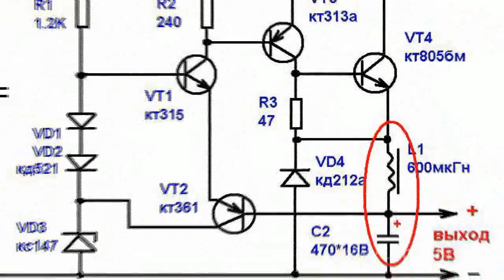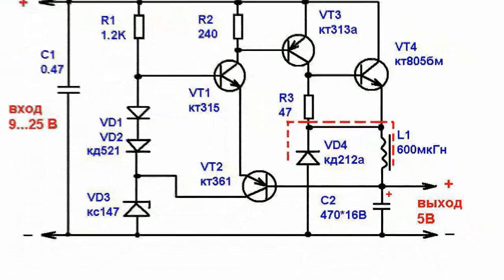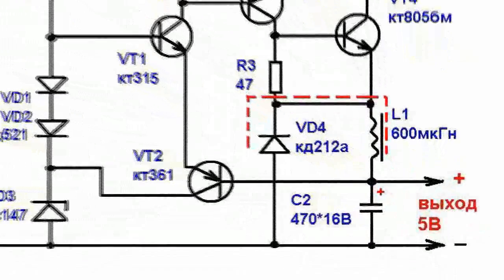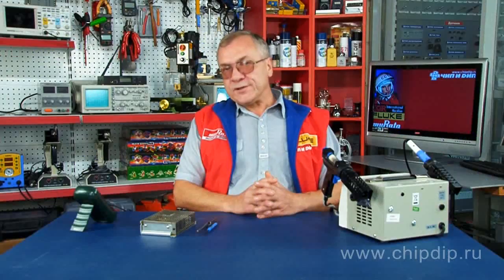Thus the transistors VT2 and VT3 also close. The diode VD4 provides the current flow through the choke L1 when the transistor VT4 is closed. Once the voltage across the capacitor C2 becomes less than the stabilization voltage, the process is repeated.